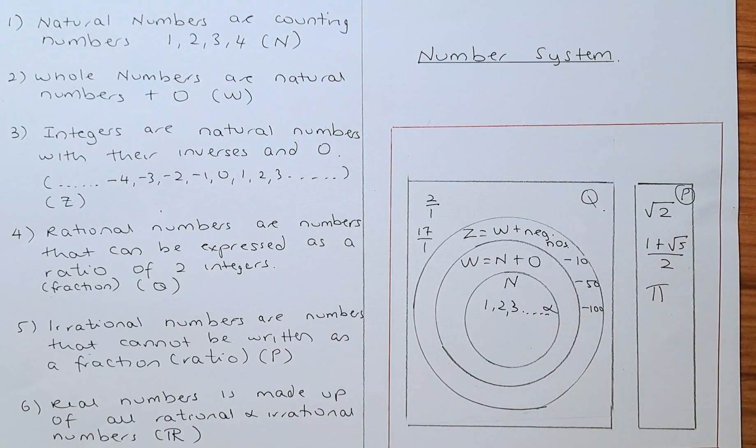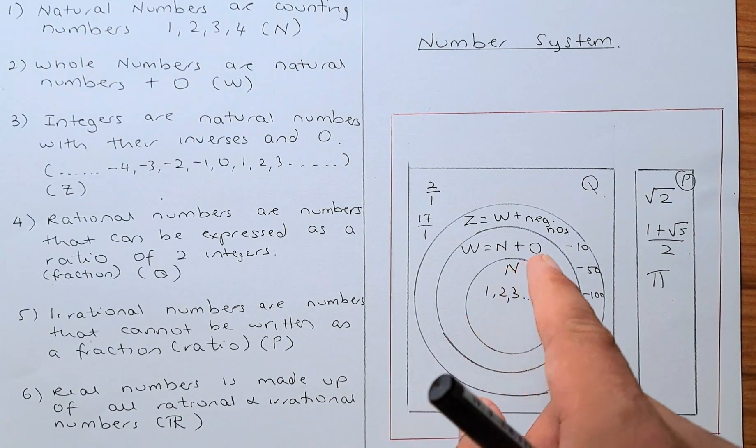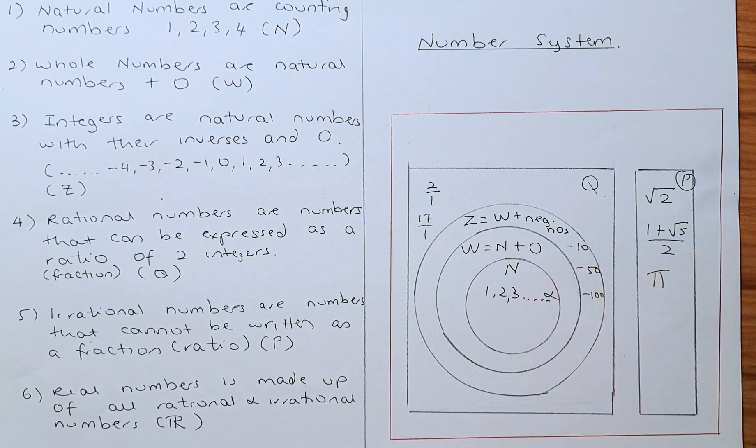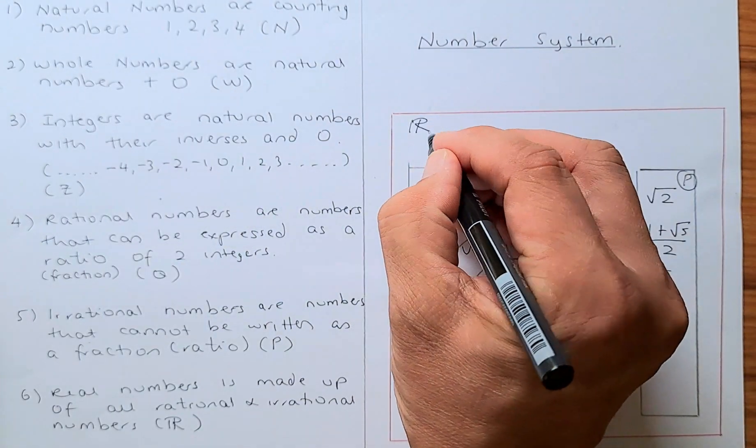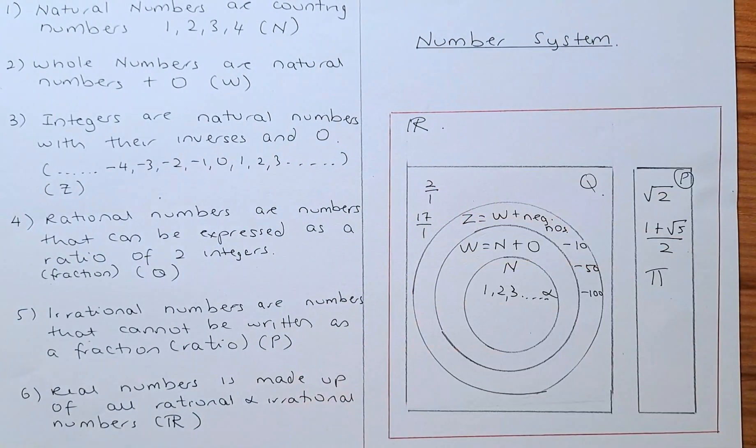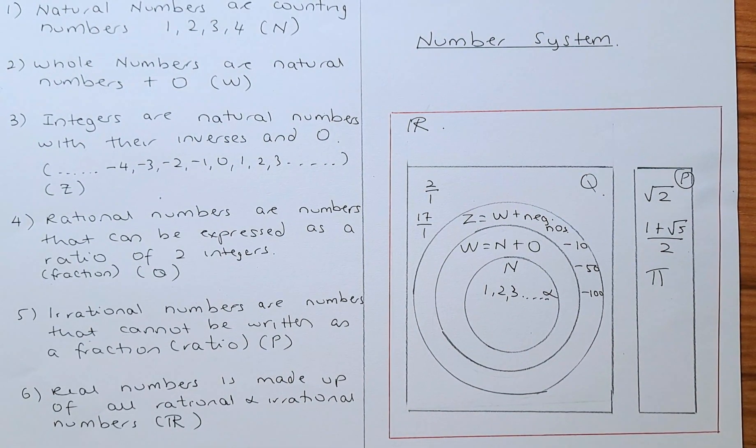So to end this, we have the real numbers. The real numbers are made up of both the rational and irrational numbers. They are represented by letter R and make up all the numbers on the number line.